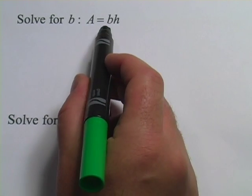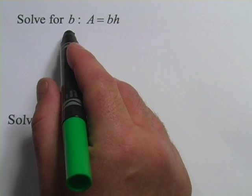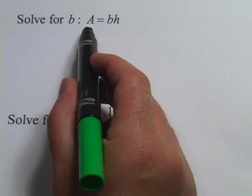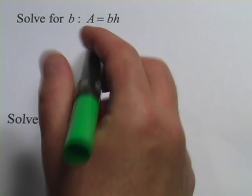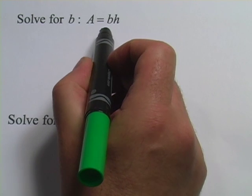Here's a formula, area equals base times height, and what we want to do is solve for B so that we would have a formula set up that if we already had the area and the height, it would give us the base. Well, to do this, we just want to get B alone. So we want to undo whatever's been done to B.